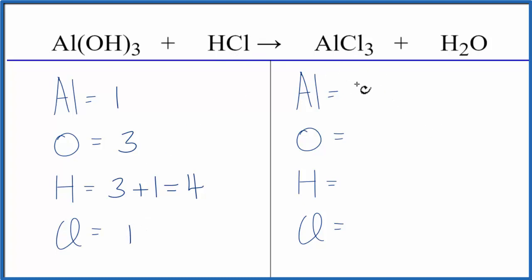On the product side, we have one aluminum, oxygens we have one, two hydrogens, three chlorines.